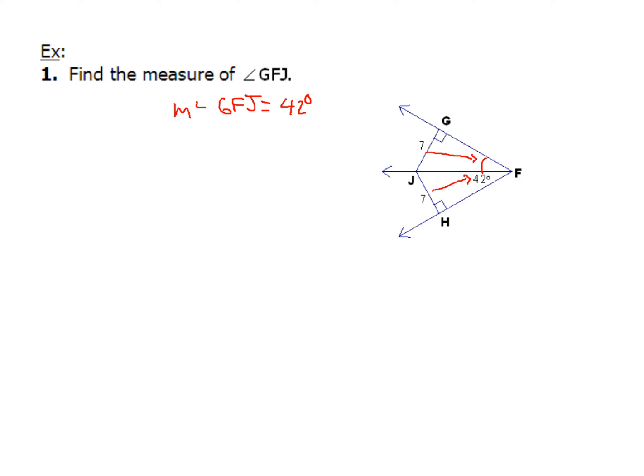But now every once in a while, and this is where you really have to be careful. Sometimes instead of asking just for the measure of angle GFJ, you might be asked, hey, what's the measure of angle GFH? Instead of just one of the interior angles. And even though you might be given just that angle 42 right there, you're going to have to make sure that you double that to come up with 84 degrees for that angle. So that's just another piece that you might see. Sometimes you'll get asked that for this type of problem.